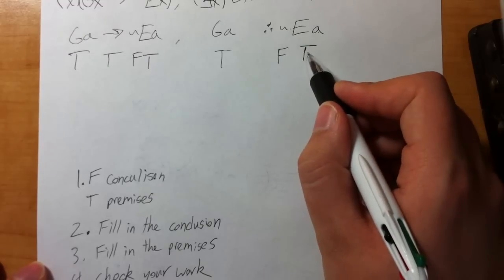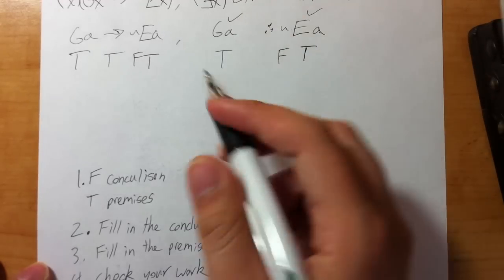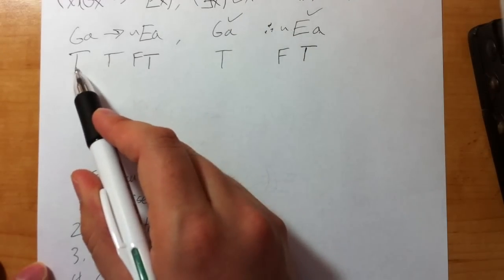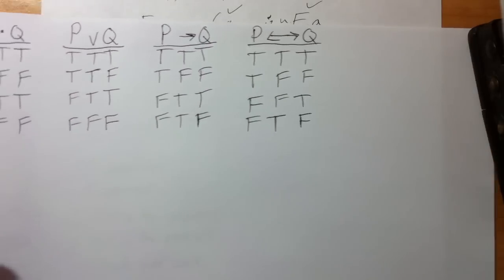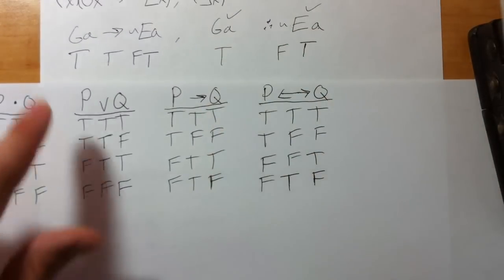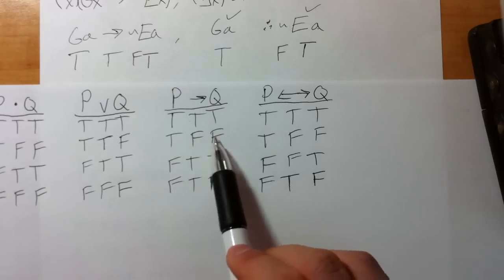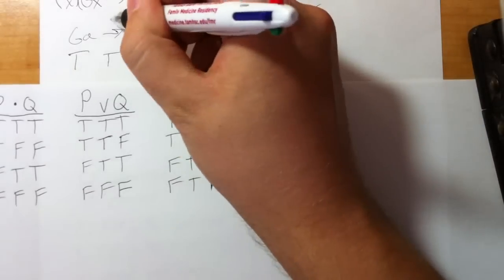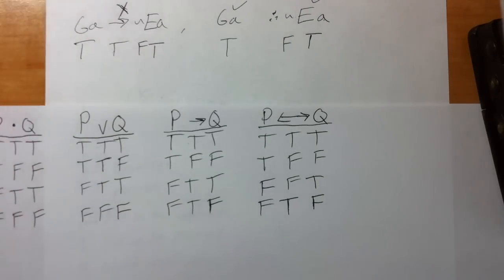Step four, check your work. Can you have a false tilde with a true other part? Yes. Can you have a true arrow with a true left side and a false right side? Checking the truth chart: T-T-F on an arrow — no, that doesn't work. So because it fails the truth chart from the first test, this one-element expansion doesn't demonstrate invalidity. We have to move on to a two-element expansion.